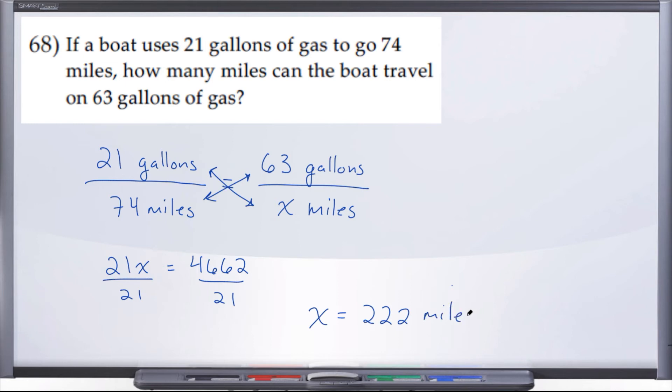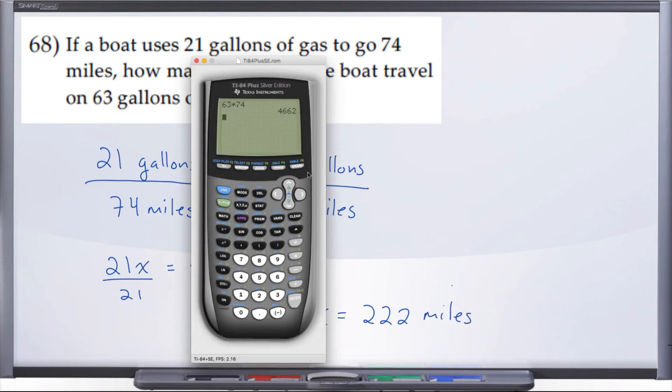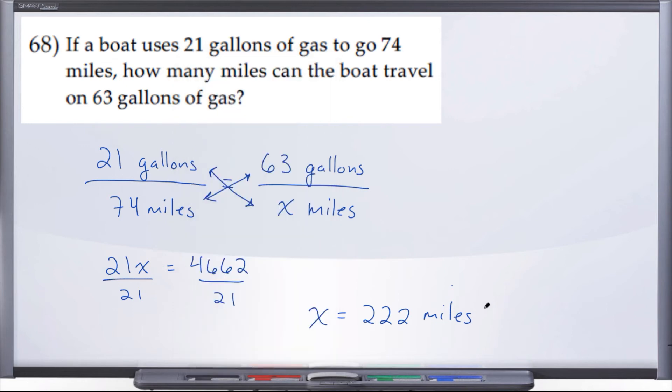But let's double check: 4662 divided by 21 gives us 222. 222 miles, and so there's the final answer.